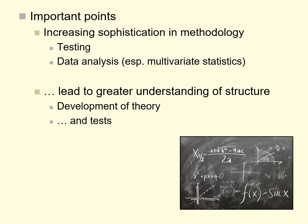Increasing sophistication in both testing methodology and multivariate statistical analysis — especially factor analysis — led to greater understanding of the structure of intelligence. Questions remain about whether intelligence is one thing (g), a set of primary mental abilities, a verbal versus non-verbal distinction, or something else. The debate and research in intelligence continues to this day, though much more sophisticated than ever before because of these methodological advances.